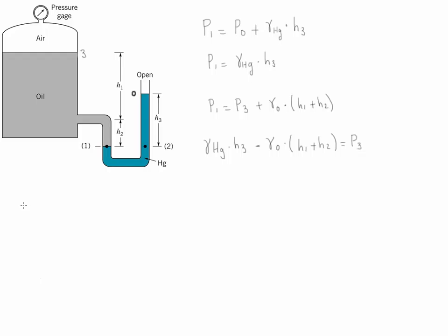Now that we have the equation, let's substitute the values that we know. In order for us to find the specific weight of mercury, we're simply going to use that the specific gravity is equal to the gamma of the fluid, which in this case is mercury, divided by the gamma of water. So this is for mercury.